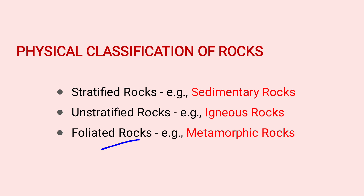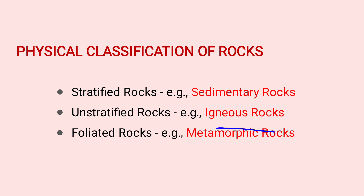Foliated rocks — for example, metamorphic rocks. In summary for Physical Classification: Stratified Rocks example is Sedimentary Rocks; Unstratified Rocks example is Igneous Rocks; Foliated Rocks example is Metamorphic Rocks.